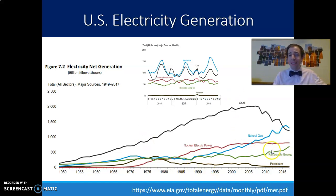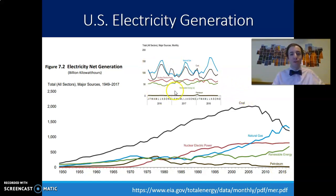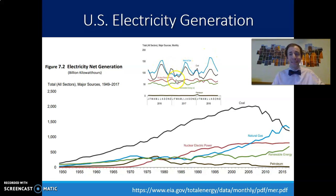You can also see that renewable energy is increasing quite a bit in terms of electricity generation. Petroleum we don't typically use for electricity — instead, we use petroleum for transportation to run our cars. You can also see that electricity usage fluctuates over time, and that we use natural gas and coal at different times in the year, and there are peaks — we'll talk about those peaks.